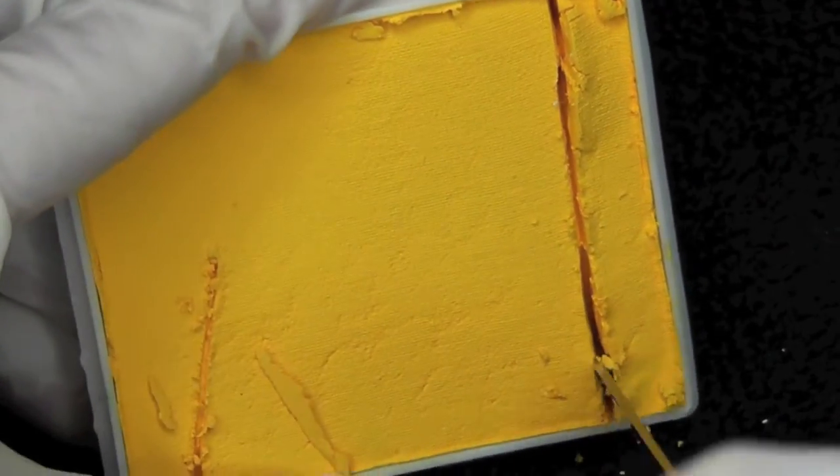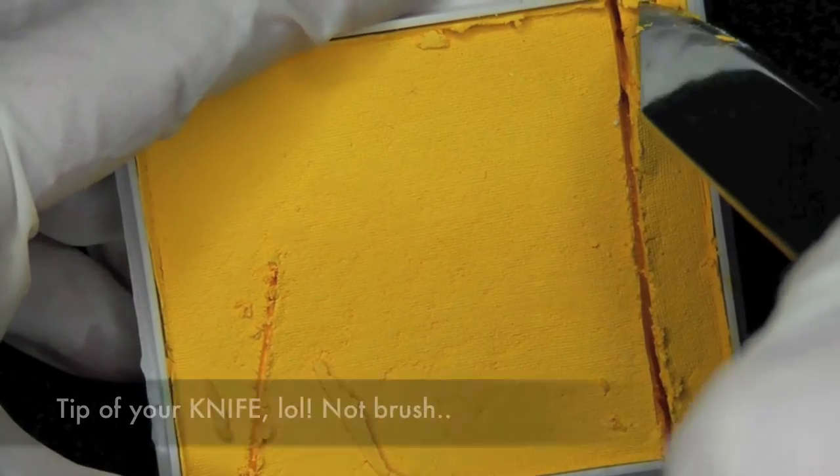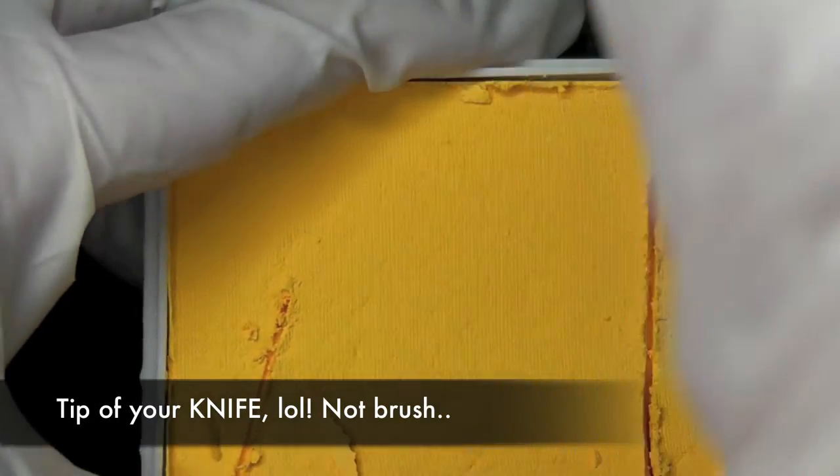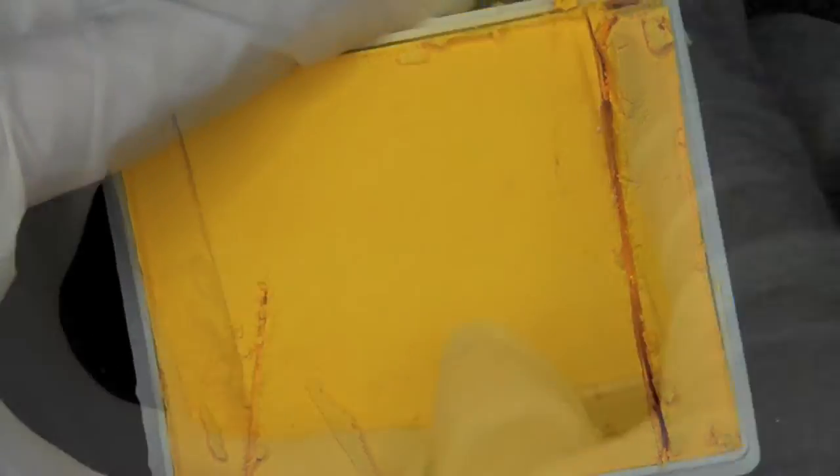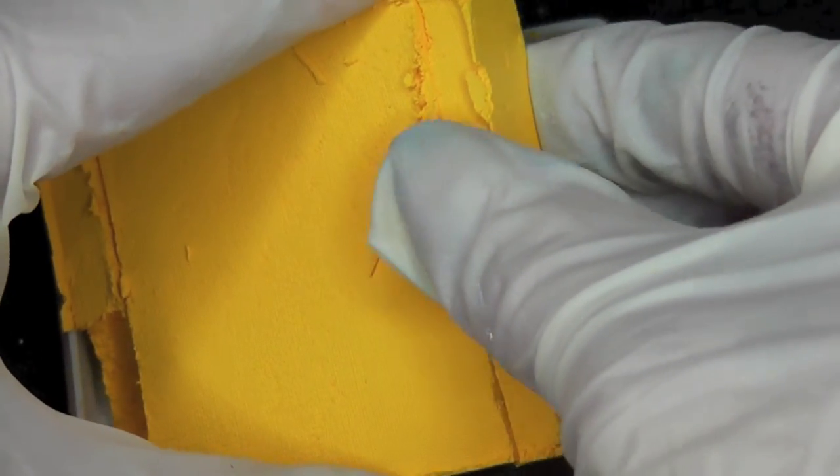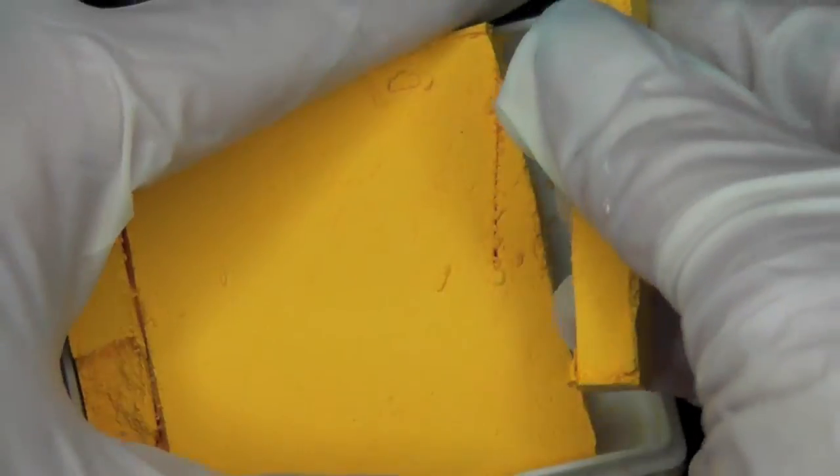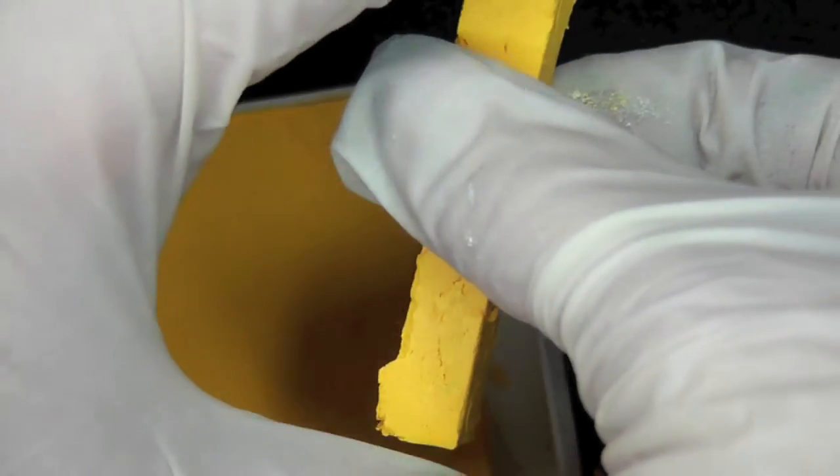So once you've got it all cut out really nice and well, you can take the tip of your brush. Usually I like to do the top and the side too to make sure it's loosened well. And then just pull that little piece of paint off. It should come off all in one piece just like that.